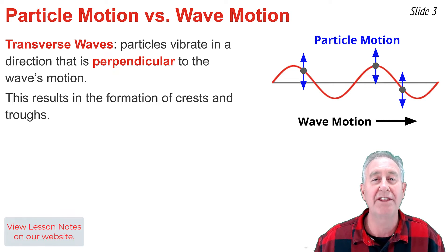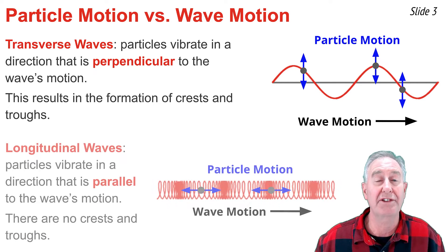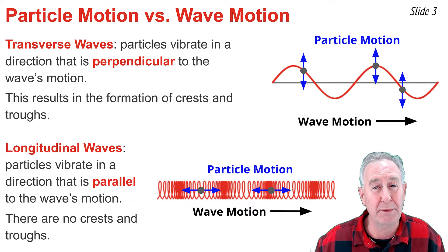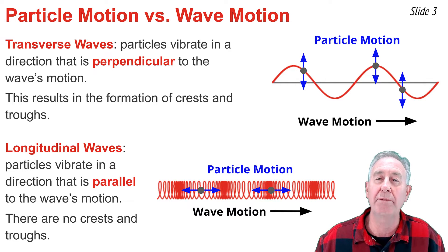In the second example, we saw an example of longitudinal waves. In a longitudinal wave, the particles of the medium vibrate back and forth, parallel and anti-parallel to the direction that the wave is moving. We don't form crests and troughs, but rather,